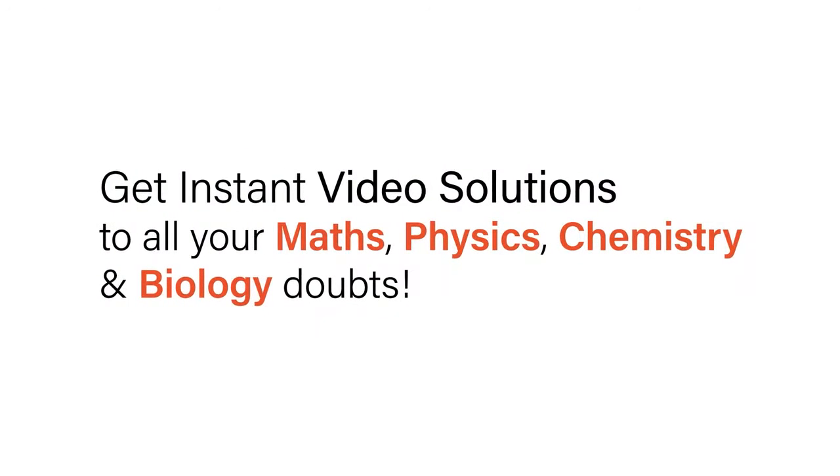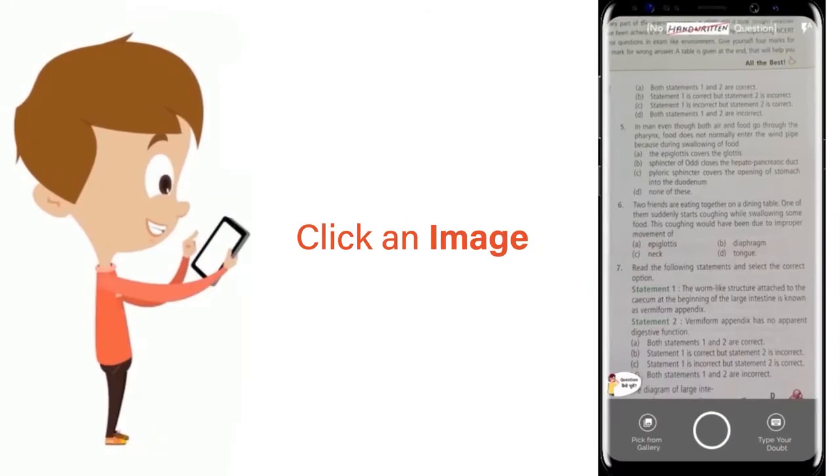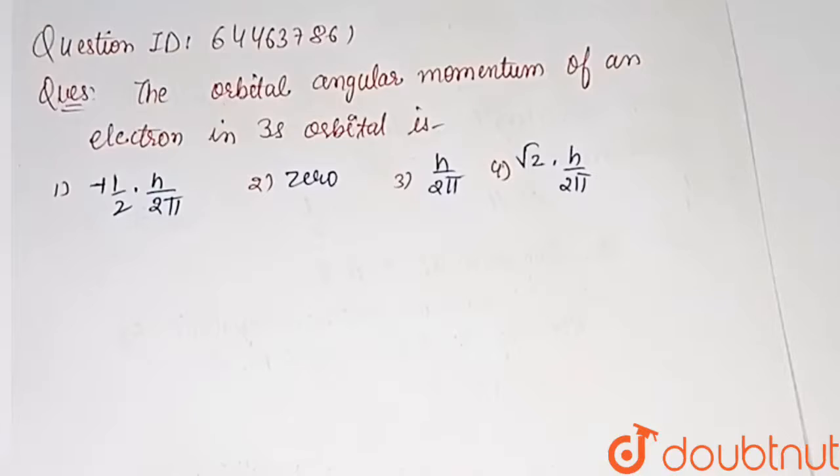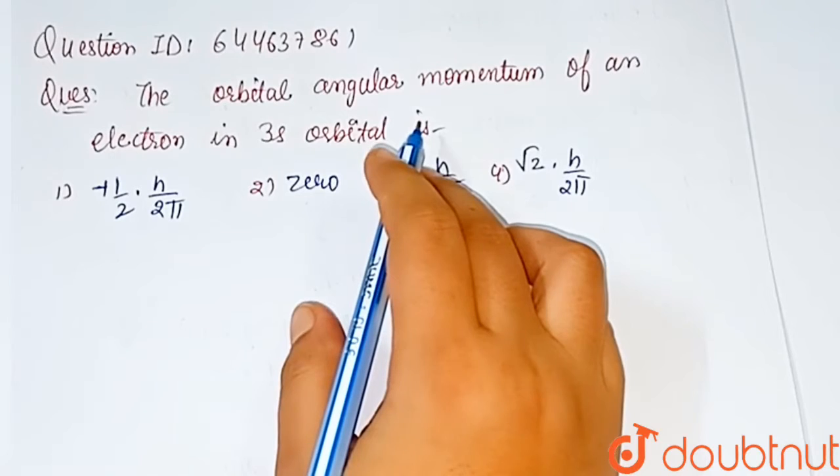With Doubtnet, get instant video solutions to all your math, physics, chemistry, and biology doubts. Just click the image of the question, crop the question, and get instant video solution. Download Doubtnet app today. Our question is: the orbital angular momentum of an electron in 3s orbital is...